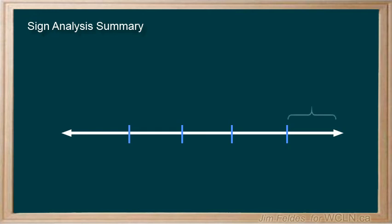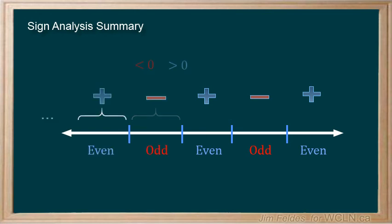As you can see, sign analysis is an effective way to solve a variety of different inequality relationships. Once again, we see a pattern forming from the signs that can help us with the solution. The last interval is always positive. Then, moving left, one negative is an odd number, so a negative interval. Then two negatives are of course even, making a positive interval. Then three is odd, four is even, etc.